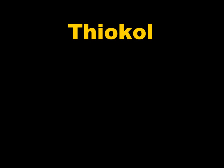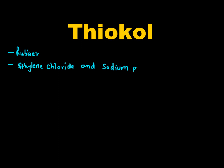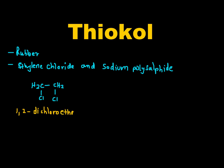Thiokol is a type of rubber which is prepared from ethylene chloride and sodium polysulphite. The structure of ethylene chloride is CH2 — its IUPAC name is 1,2-dichloroethane — which is treated with Na-S-S-Na (sodium polysulphide).